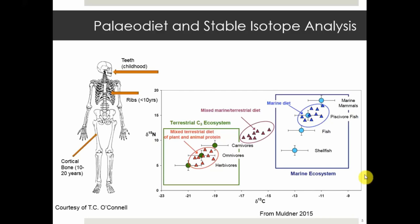Essentially in my research I'm trying to get a snapshot into childhood diet and the last 10 years or so of life, to look at change in diet over the life course. If you use cortical bone from a long bone, these turn over more slowly — we think it's more or less a 10-to-20-year average. So when comparing different bones you really have to think: am I talking about someone's whole life, 20 years, or just tooth formation around age five?